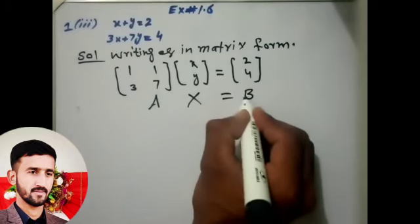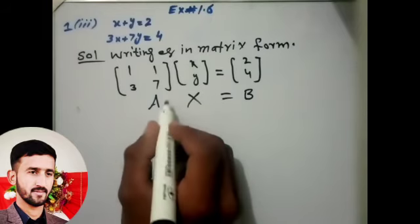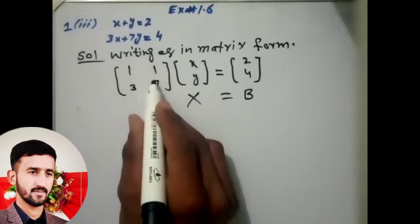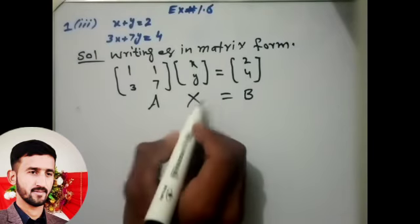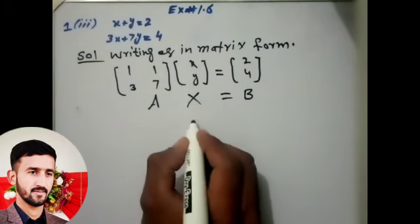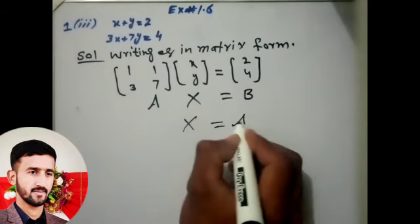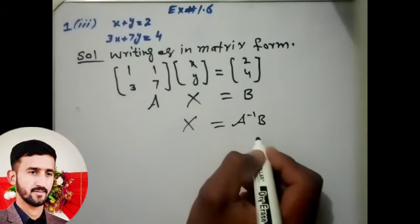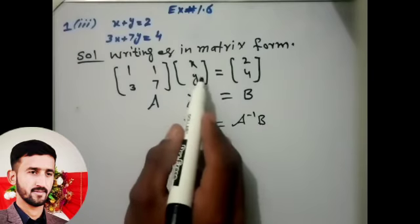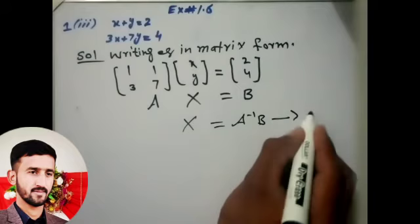X times B, which can be represented by: this one is A, this one is X, and this one is B. So X is equal to A inverse B because we find the value of X and Y.